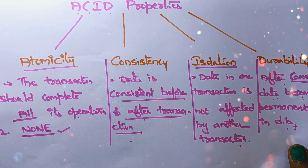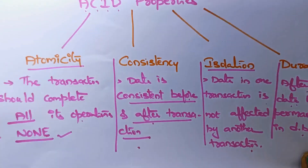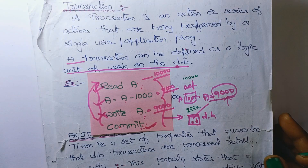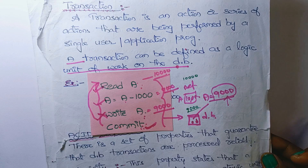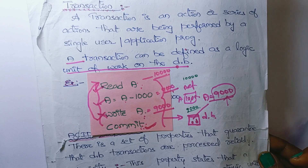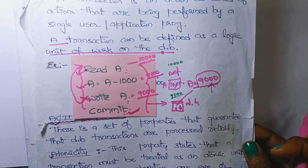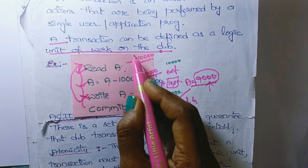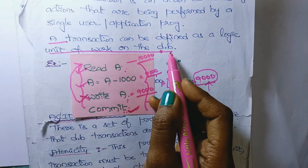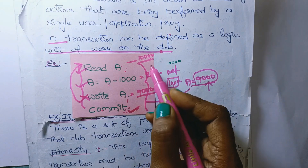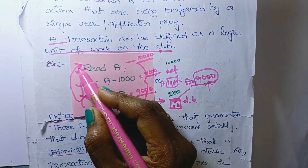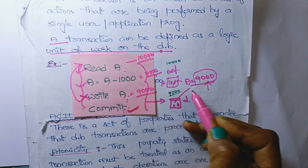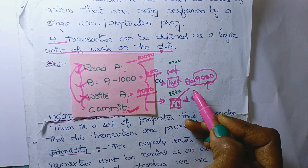We will see what is a transaction and what are the ACID properties. A transaction can be defined as a logical unit of work on the database. A transaction is nothing but a set of operations which are performed on the database.